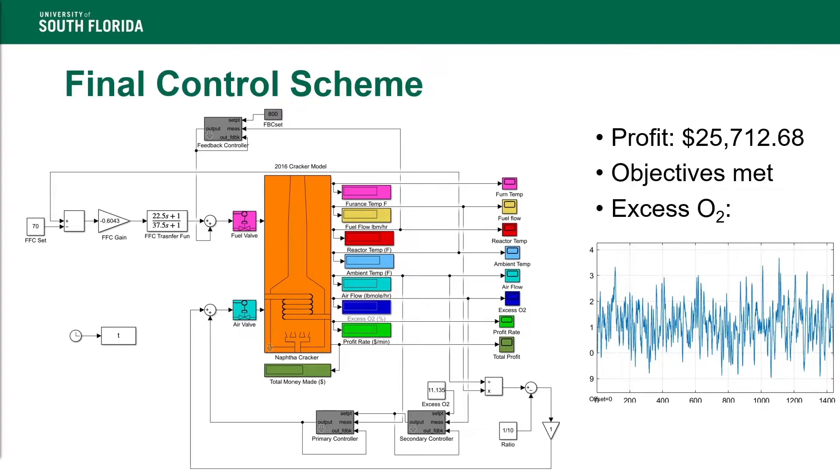After evaluating both alternatives, Alternative 1 showed better control of the excess O2. Alternative 1 was combined with a ratio control, where the ratio controller adjusted the position of the air valve based on the fuel flow to the air flow, which had a ratio of 1 over 10. The set point of the excess O2 had to be raised to 11.135%, which lowered the profit. The tradeoff here was between the profit and the excess O2, but to ensure safe operation of the plant, the loss in profit was seen as acceptable. The final profit was $25,712.68. The objectives were met as profit was maximized and safety was not compromised. While occasional dips below 10% remained, the excess O2 never dipped below 9%.